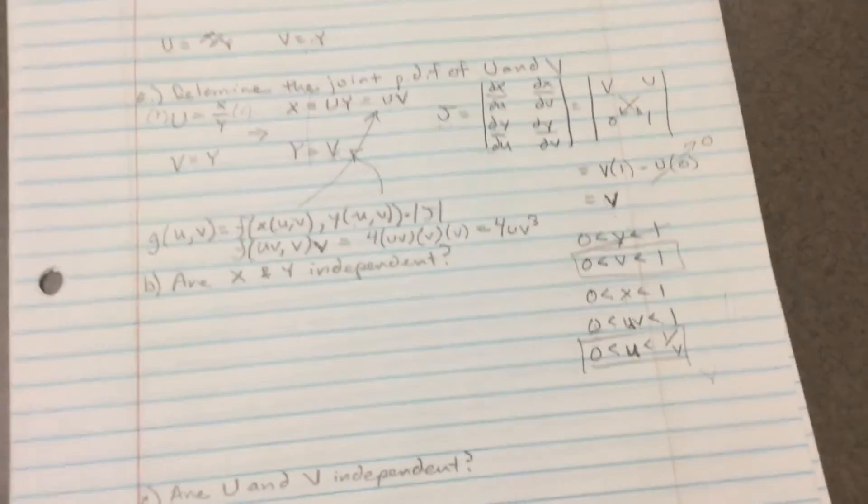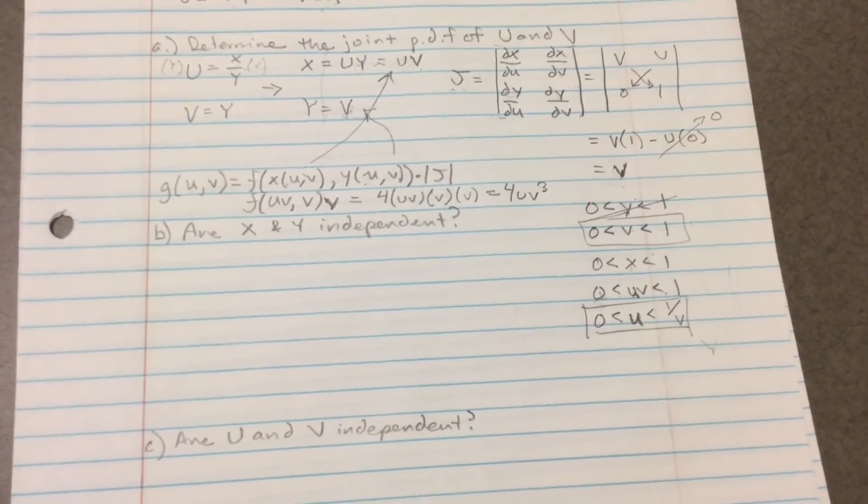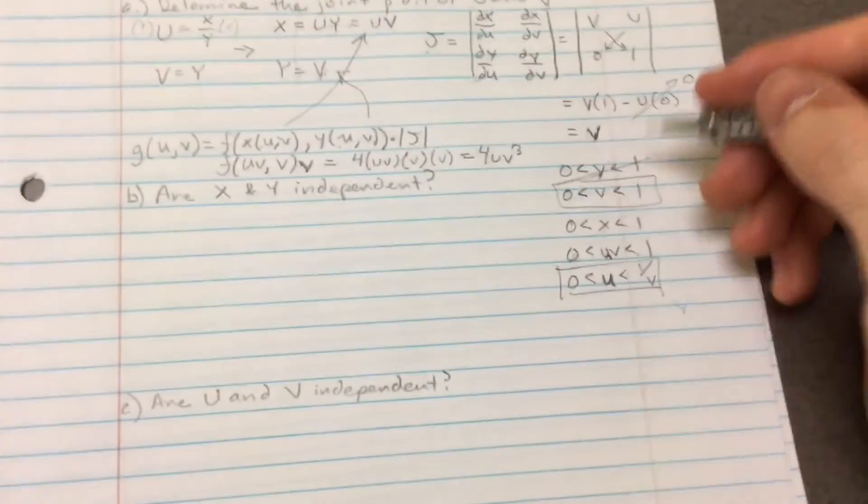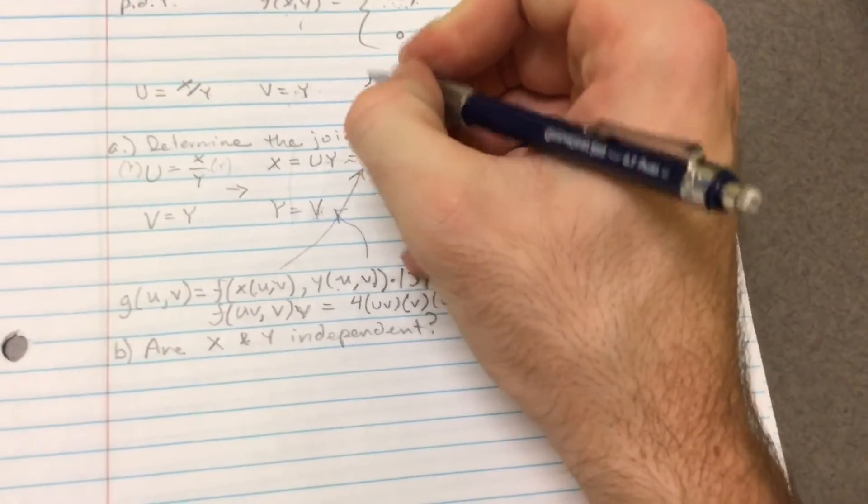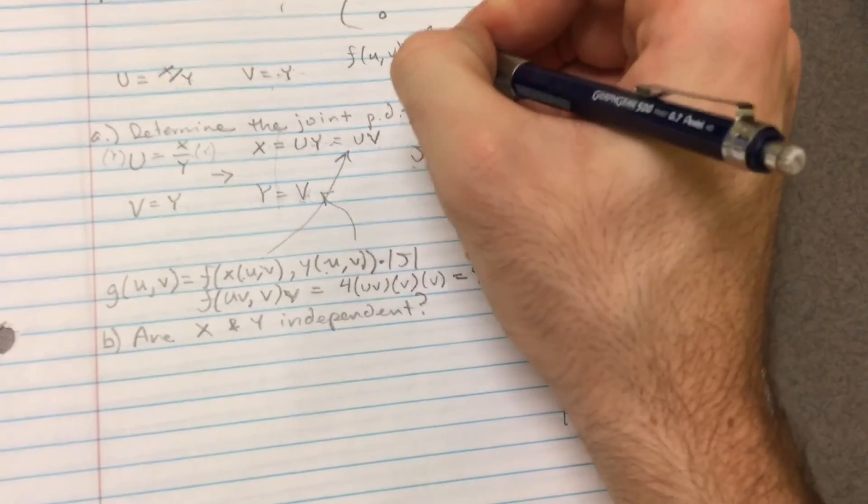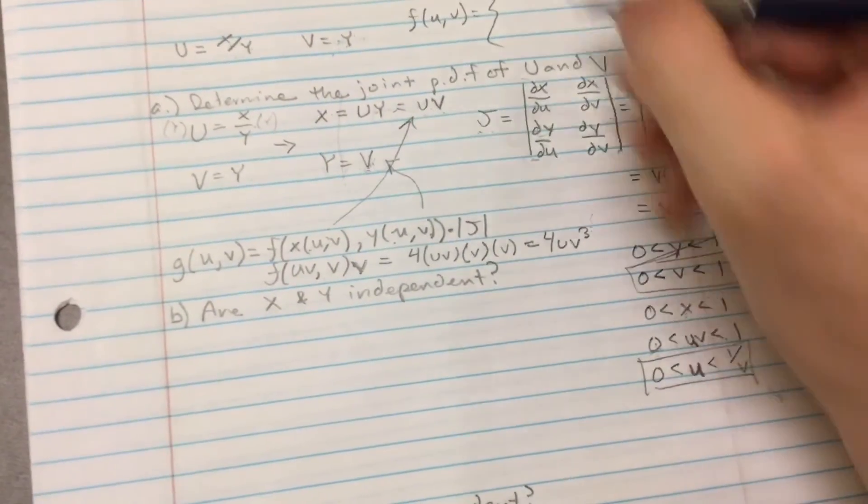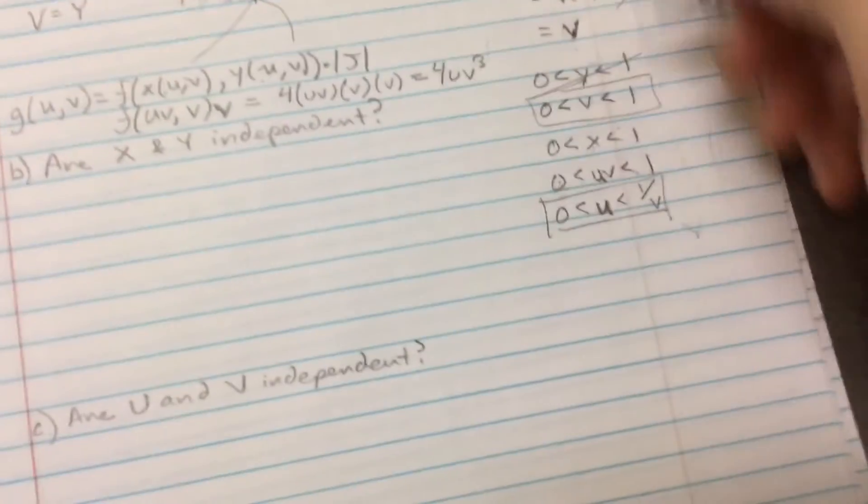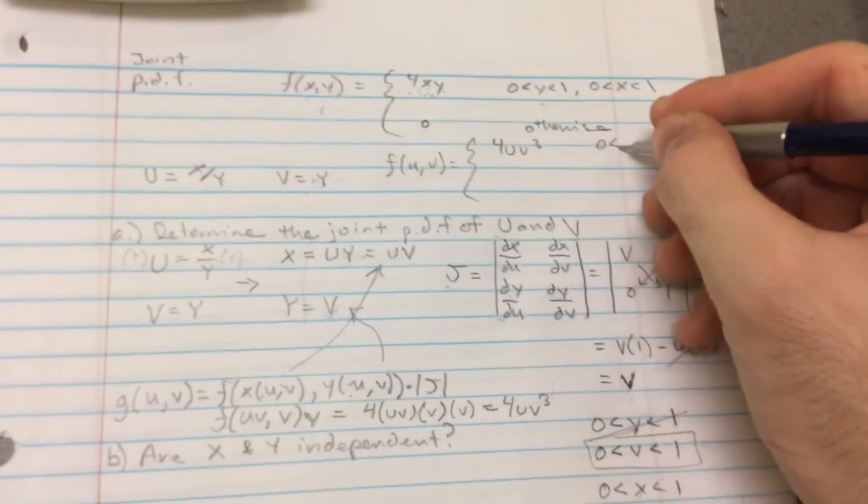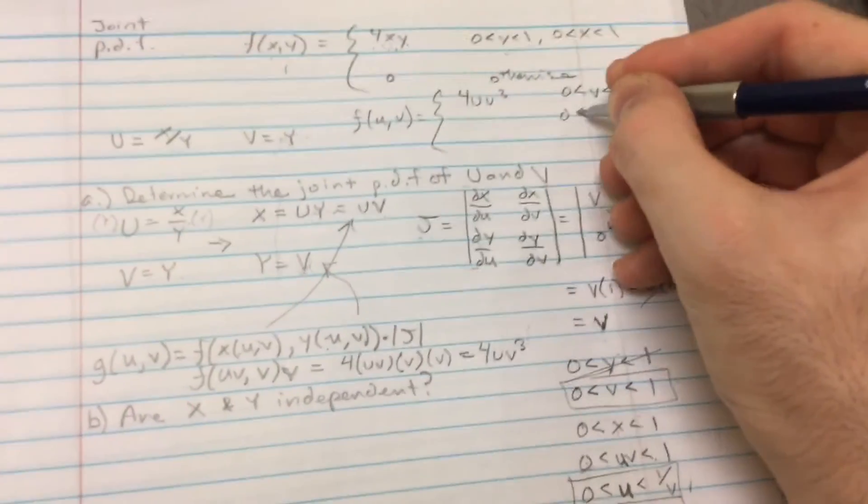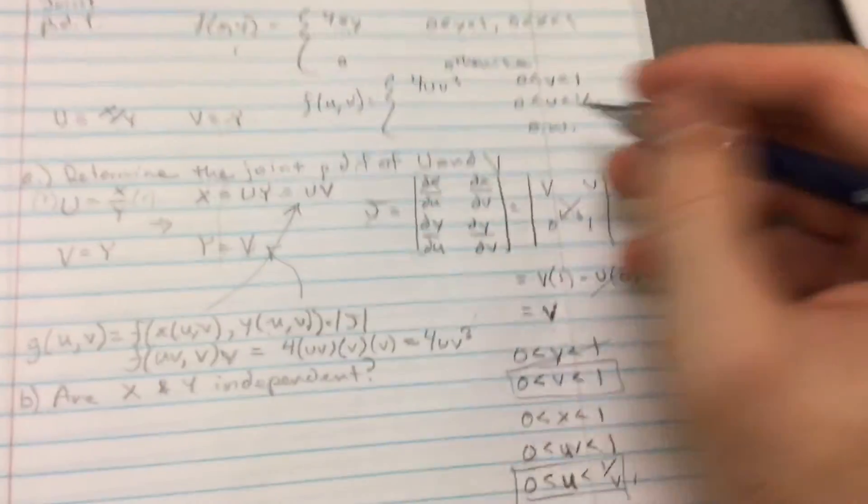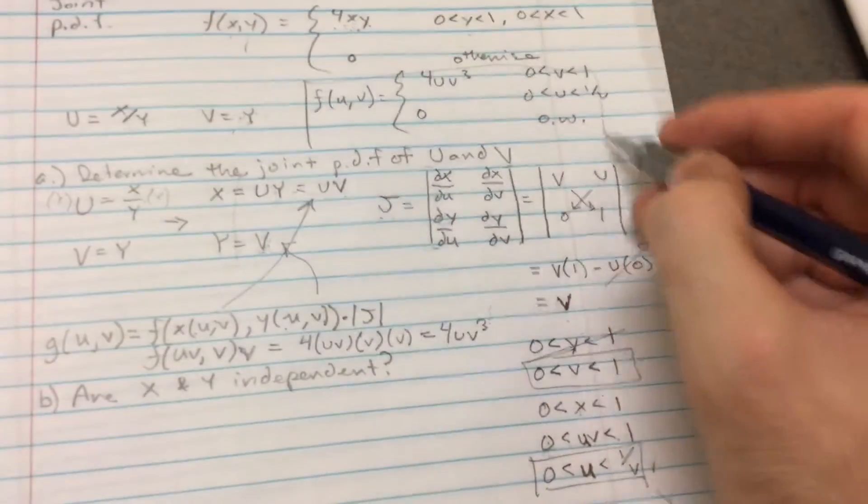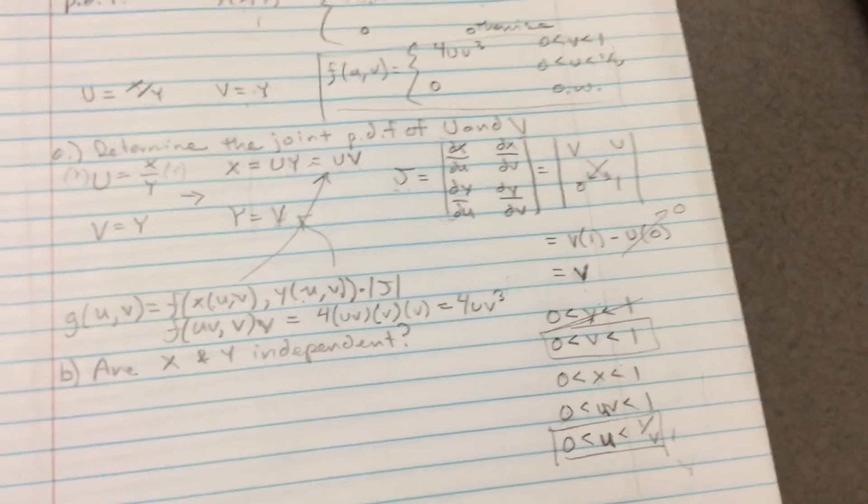Now, our updated bounds actually. To finish this joint PDF, we need to assemble it in the proper joint PDF form. It's going to take up a little bit of space, but I'll do it up here. So F of U and V is equal to what we just found out, it was this, 4 U V^3. And then we found out the new bounds are these two are here. So as follows. And then O.W. is abbreviated for otherwise. So this is our joint PDF of U and V.